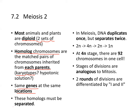During meiosis, homologs must be separated. In mitosis, sister chromatids are separated, but in meiosis, both homologs and chromatids must be separated. In meiosis, DNA duplicates once but separates twice, going from 2N to 4N to 2N to 1N. At the 4N stage, there are 92 chromosomes in a single cell.